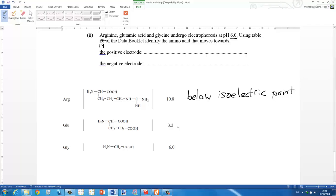For glutamic acid, pH 6 is above the isoelectric point, and for glycine pH 6.0 is the same as the isoelectric point.